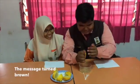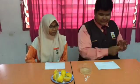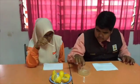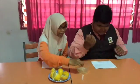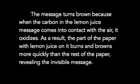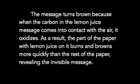The message turns brown because when the carbon in the lemon juice message comes into contact with the air, it oxidizes. As a result, the part of the paper with lemon juice on it burns and browns more quickly than the rest of the paper, revealing the invisible message.